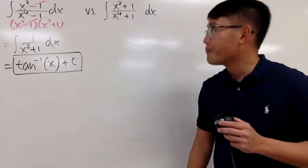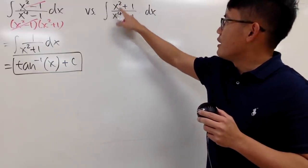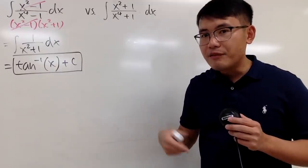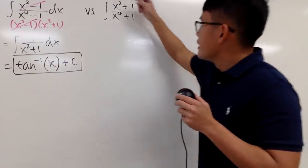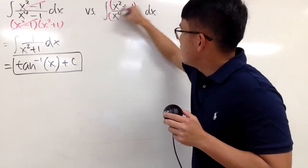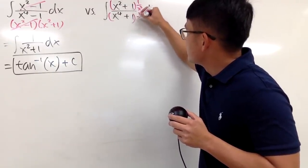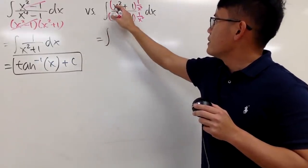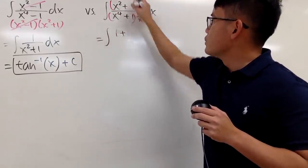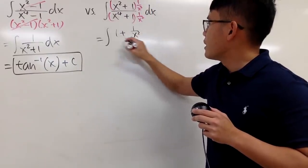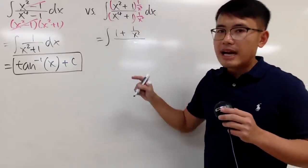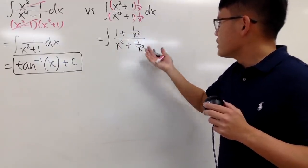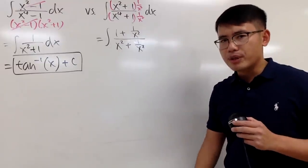This is what we can do: notice I have x² and x⁴ here. We'll start by dividing everything by x². You'll see everything pairs up nicely. Let me write this down. The integral now has (1 + 1/x²) over (x² + 1/x²), so it pairs up pretty well.